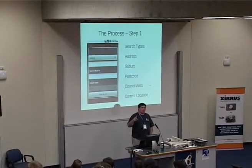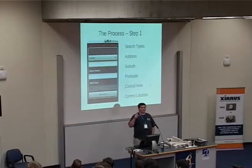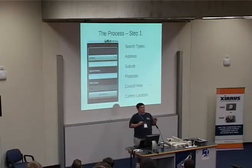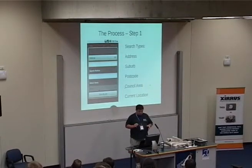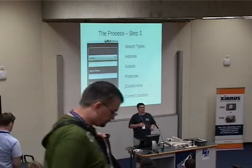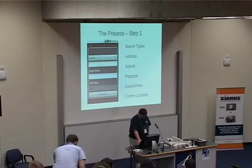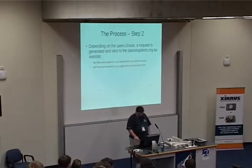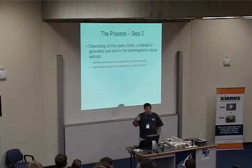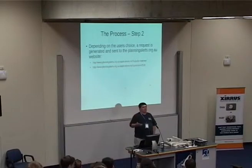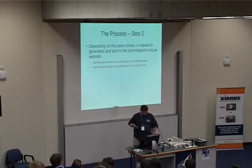The API actually allows for geotagging of an area, but I haven't figured out how to work that into the phone itself yet. So at the moment it just pulls down your GPS location and submits that to the Planning Alerts site. Depending on what the user chooses, a GET URL is generated and sent to the Planning Alerts site.